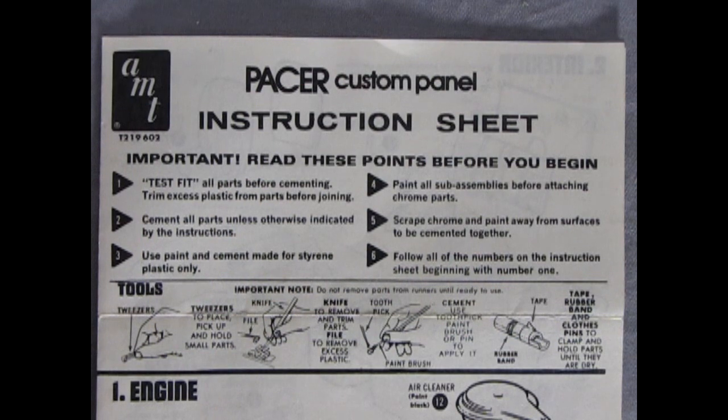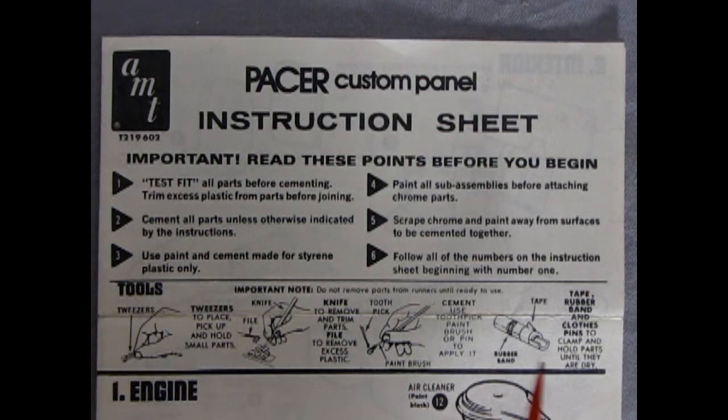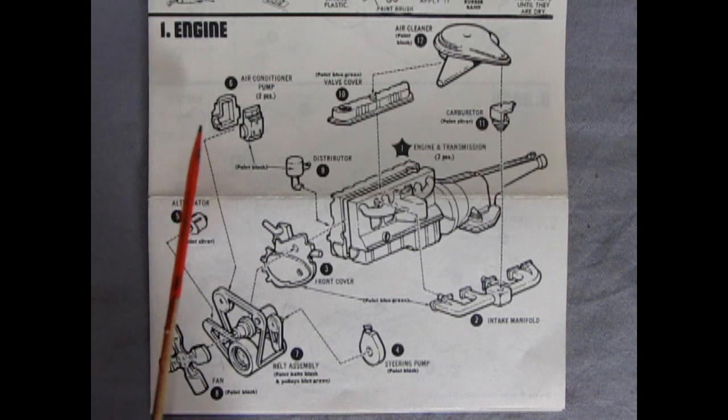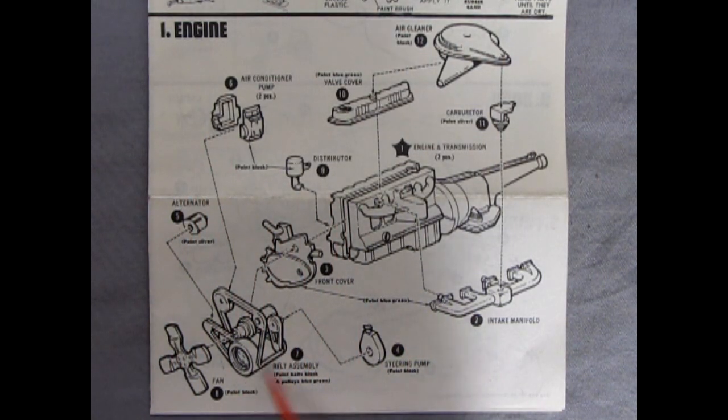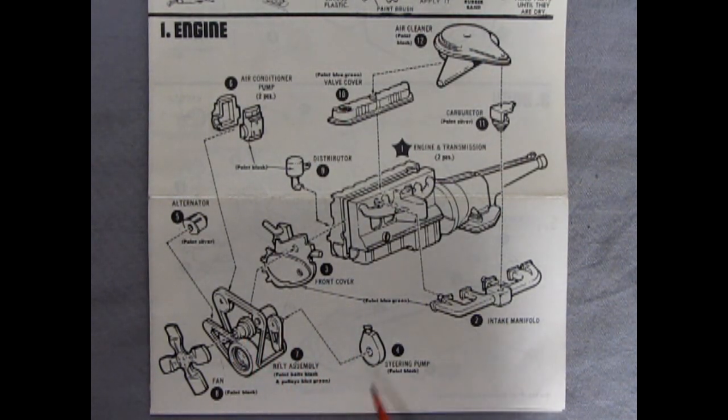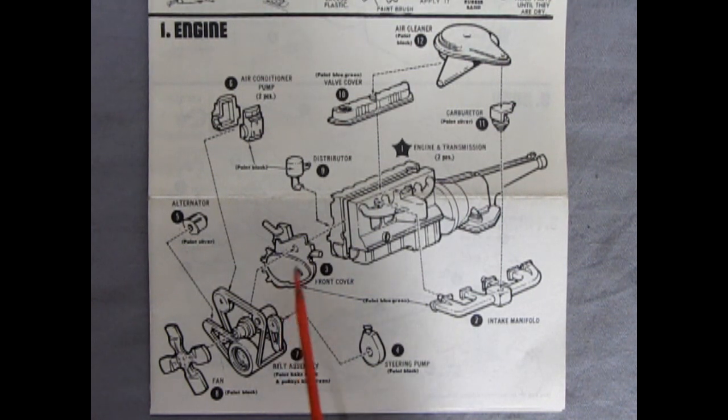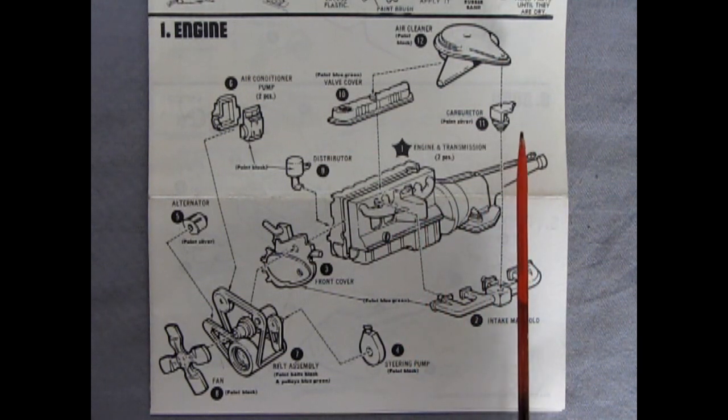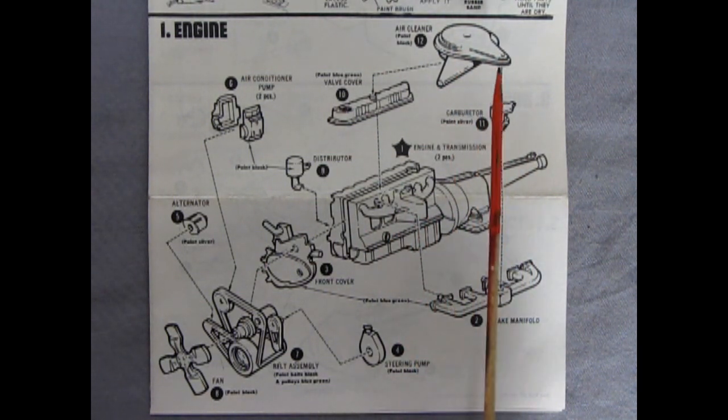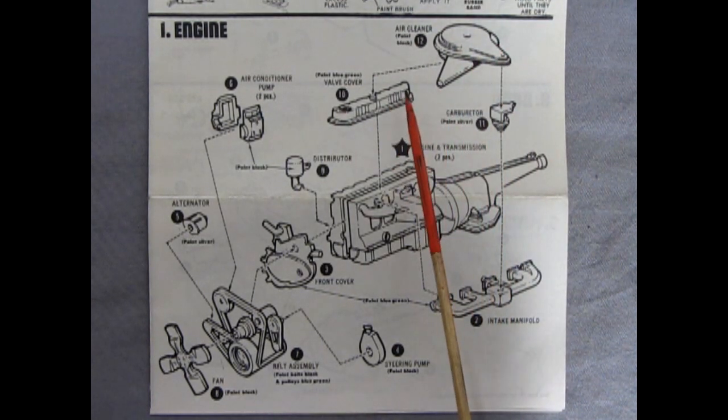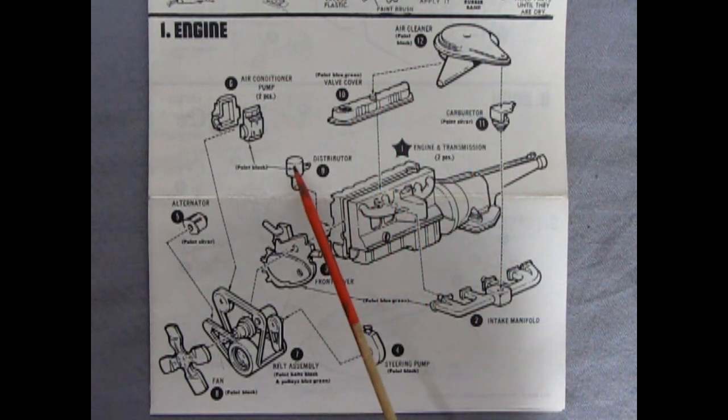Now let's carry on by taking a look at our Pacer custom panel instruction sheets and down here we've got our tools for what we need to build this kit. Now our first panel shows our engine going together and here we've got an air conditioner pump, alternator, we've got our big belt assembly which you're going to see in the parts which is really crazy actually. Then we've got our fan and our steering pump, the front engine cover, intake manifold. Now the exhaust manifold is molded in on the block and then we've got our carburetor here, our air cleaner. Interesting it crosses over here but the air intake is down here. And then there's our valve cover and our distributor right up in the front.